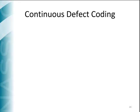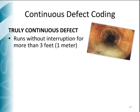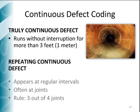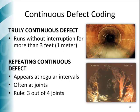We're going to review the differences between truly and repeating continuous defects. Truly continuous defects are those running without interruption for more than 3 feet or 1 meter. A repeating continuous defect is that defect that occurs at several joints along the pipeline segment. The rule for this type of continuous defect says that at least 3 out of 4 joints, or 75%, should be affected by the defect in order to qualify as a continuous defect.